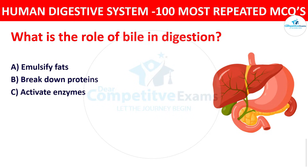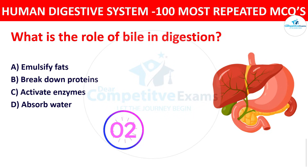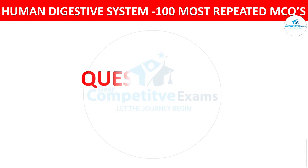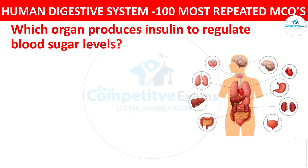Question number four: What is the role of bile in digestion? The options are emulsify fats, breakdown proteins, activate enzymes, or absorb water. The right answer is emulsify fats. Bile emulsifies fats, breaking them into smaller droplets to enhance digestion by lipases. Question number five: Which organ produces insulin to regulate blood sugar levels? Your options are liver, pancreas, gallbladder, or stomach.